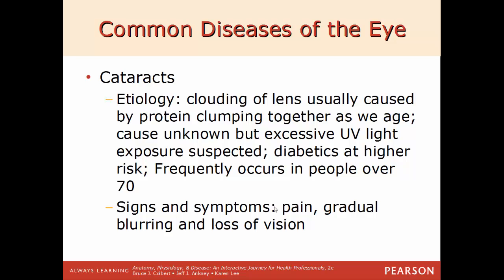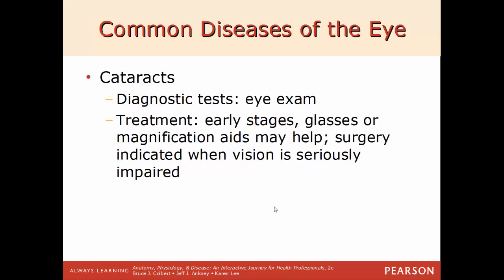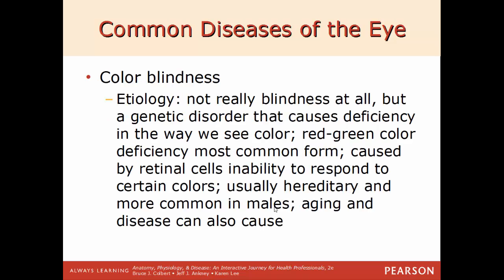Cataracts in detail: clouding of the lens caused by proteins clumping together as we get older — the cause is unknown but excessive UV light exposure is a prime suspect. Diabetics are at a much higher risk of developing cataracts. Cataracts frequently develop in people 70 years of age or older. Signs include pain, gradual blurring, and eventual loss of vision. Diagnosed by eye exam. In early stages, glasses or other magnification aids are used; if vision is seriously impaired, surgery is required.